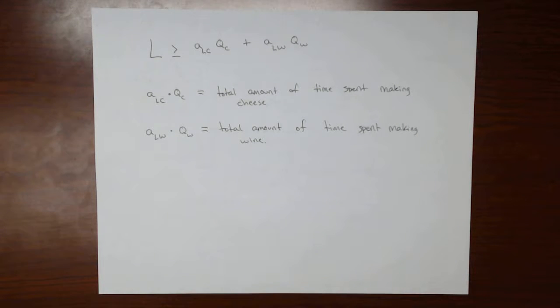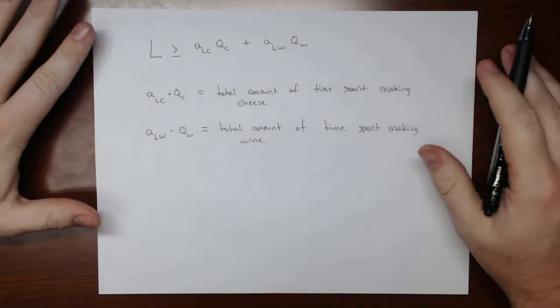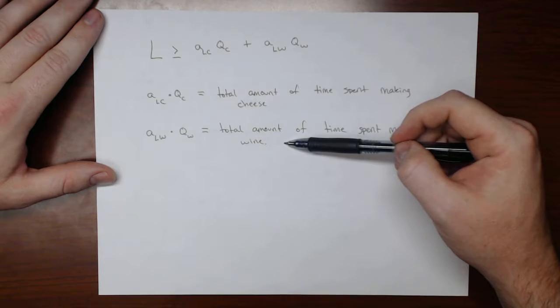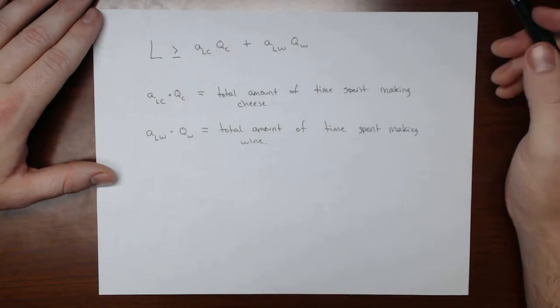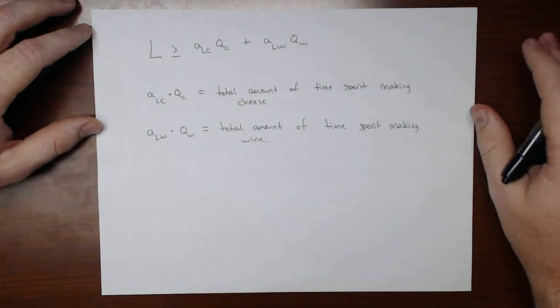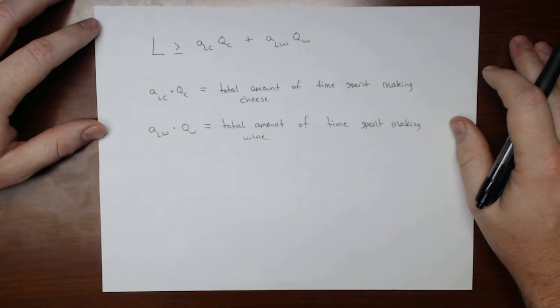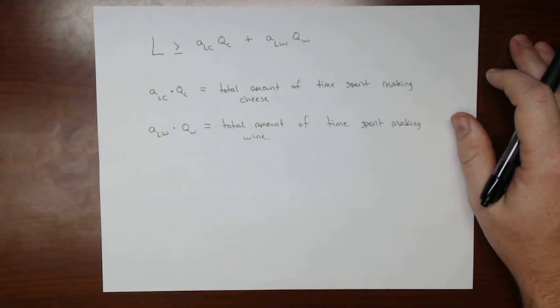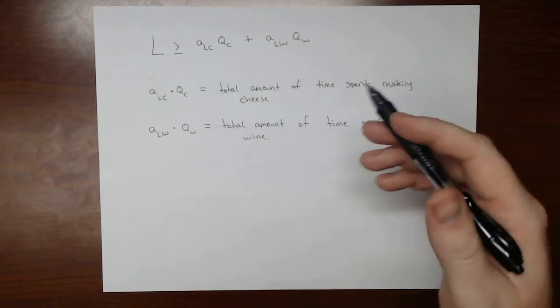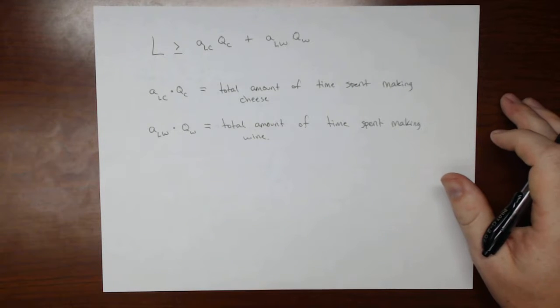And what this is saying is that if we have a country that only produces cheese and wine, then the total amount of time spent making cheese plus the total amount of time spent making wine has to be less than or equal to the total amount of labor hours that there are. Or in other words, if there's only 24 hours in a day and you dedicate 12 hours towards making cheese and 12 hours towards making wine, then you cannot dedicate a 13th hour towards either one of those products. If there's only 24 hours in a day, then the total amount of time you spend per day doing things has to add up to 24.